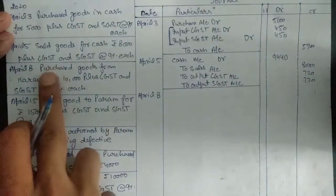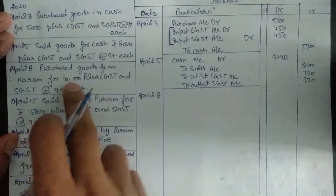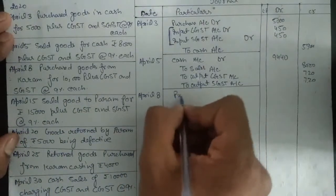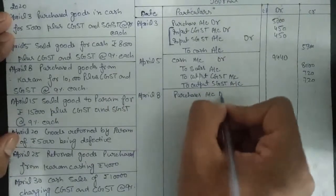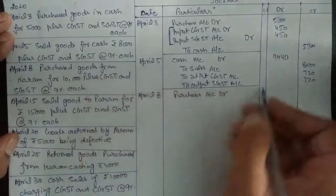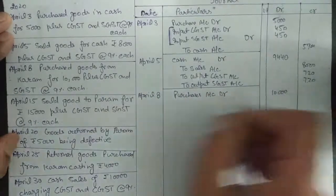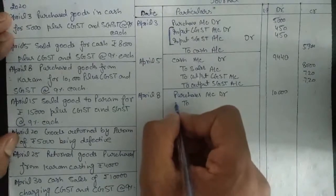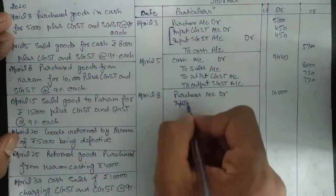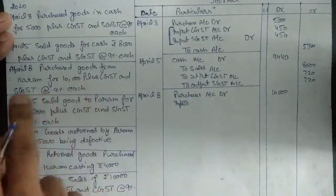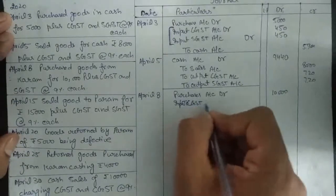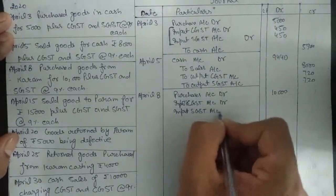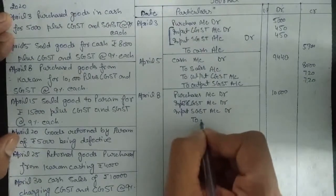The next entry is April 8th: purchased goods from Karam for ₹10,000 plus CGST and SGST at 9% each. This is also a purchase entry. Purchase account debit for ₹10,000. In case of purchase we need to pay GST, so we also debit Input CGST account and Input SGST account, and credit Karam.